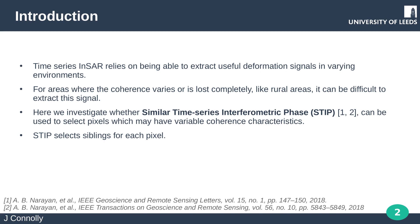A large part of time series INSAR is selecting pixels that will give you reliable deformation measurements. For rural areas where coherence may exist only on short timescales or not at all, coverage can be problematic. We've been investigating similar time series interferometric phase, or STIP, which has been developed by Narayan et al. 2018 as a potential method to select pixels with varying coherence.